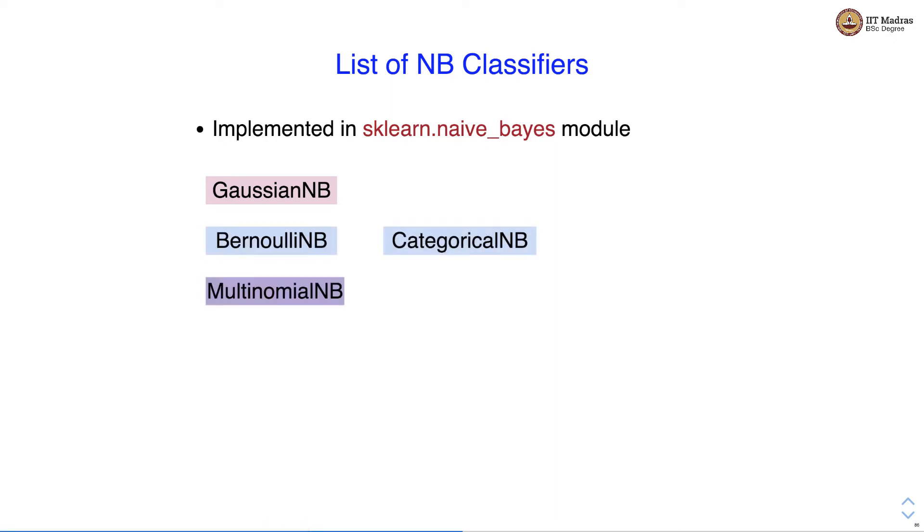Let's look at the list of Naive Bayes classifiers implemented in sklearn. The Naive Bayes classifiers are implemented in sklearn.naive_bayes module. There are five different Naive Bayes classifiers: GaussianNB, BernoulliNB, CategoricalNB, MultinomialNB, and ComplementNB.